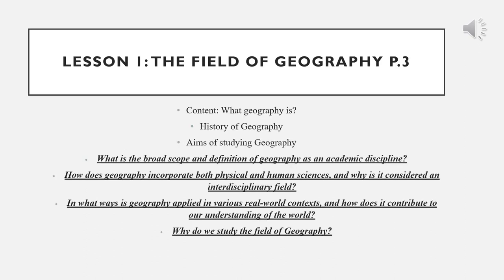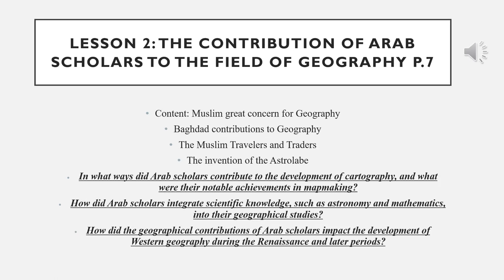Regarding our E1 exam, the unit is going to be listed into different lessons. We're going to deal with the field of geography again — what geography is, the history of geography, and some aims for studying geography. These are a couple of guided questions that would help you figure out the lesson itself: what is the broad scope or definition of geography as an academic discipline?